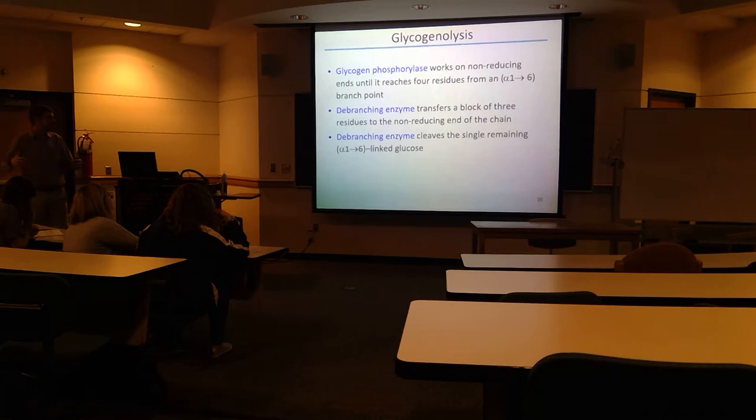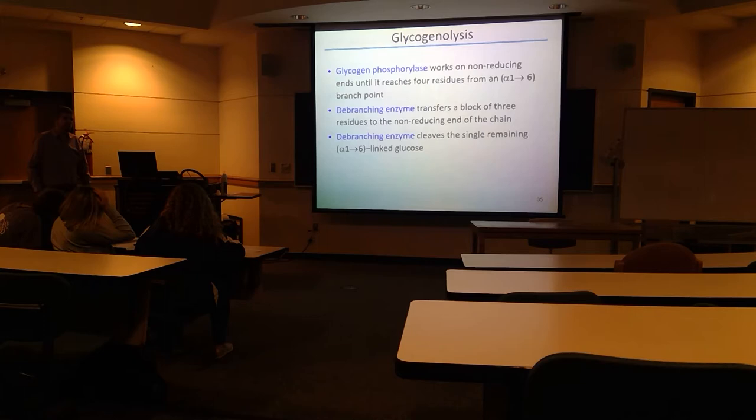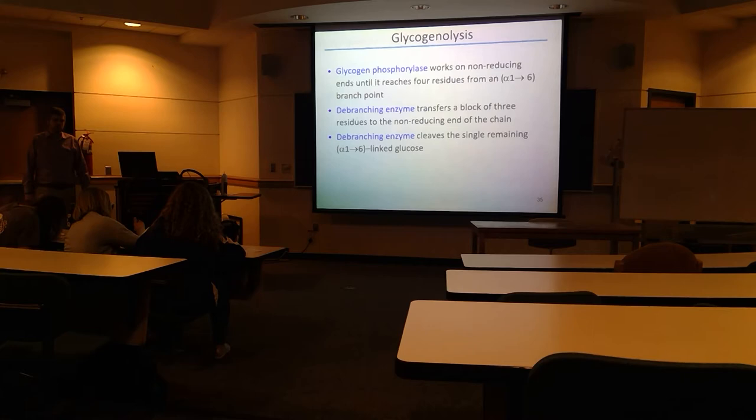Glycogen phosphorylase breaks apart the alpha-1,4 linkages, but when it gets near the branch points it needs two other enzymes — the debranching enzyme. The debranching enzyme helps get rid of the branch points, the alpha-1,6 linkages of glucose. Then glycogen phosphorylase goes off the rest of it.